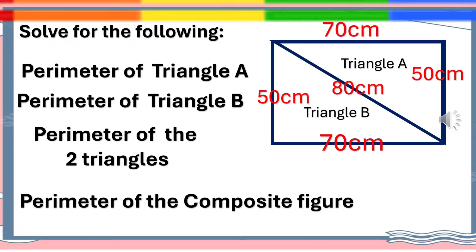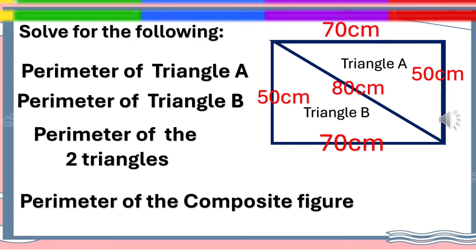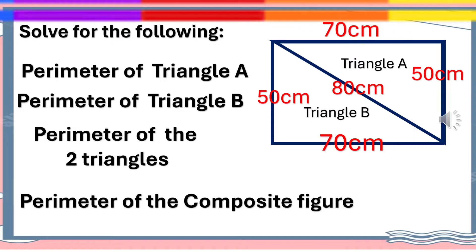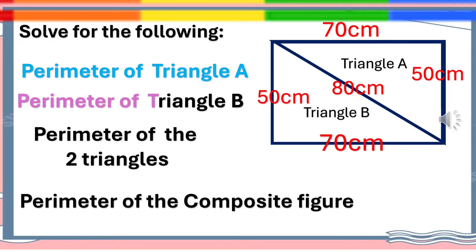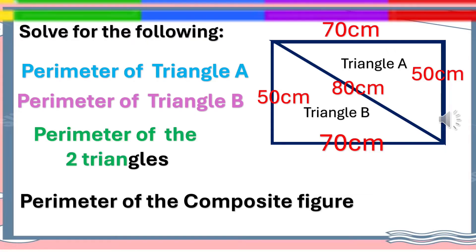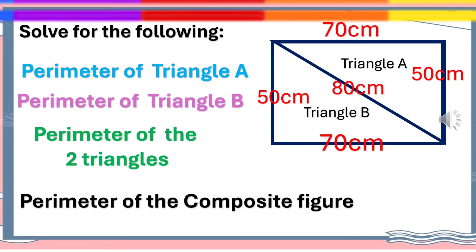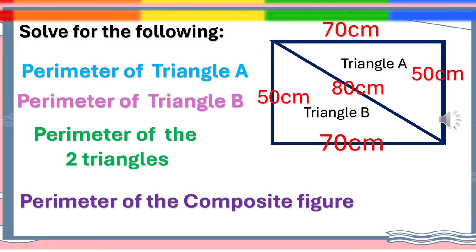To solve the problem, we will perform four solutions. First, we will solve for the perimeter of Triangle A. Next, the perimeter of Triangle B. Then we will calculate the perimeter of the two triangles. And after that, we will solve for the perimeter of the composite figure.